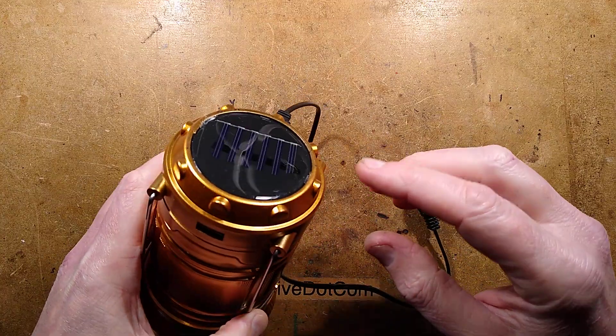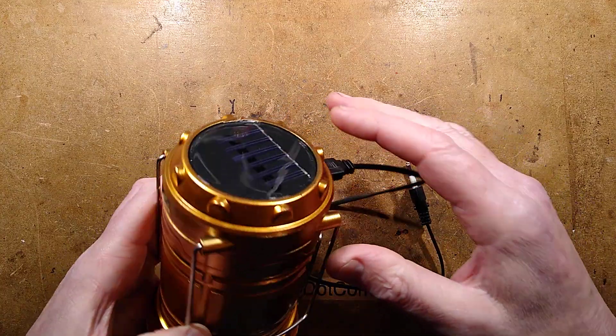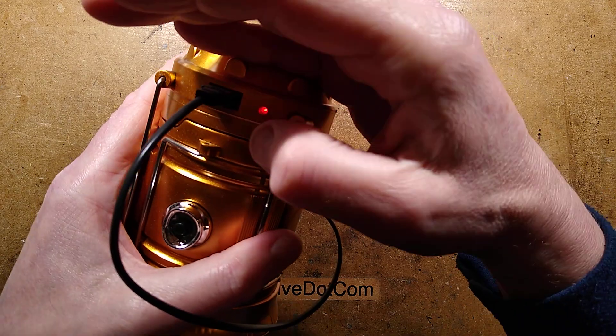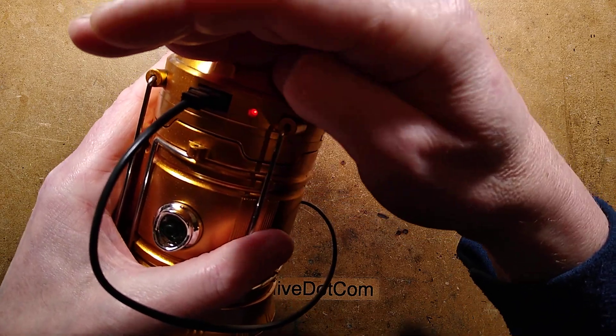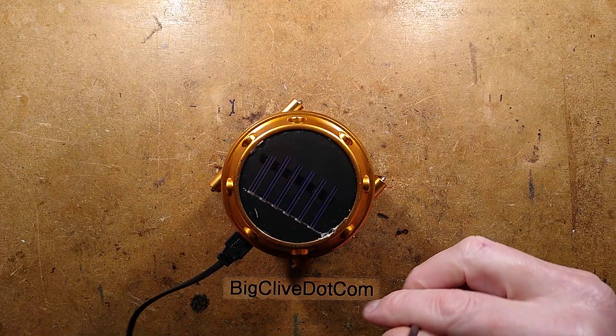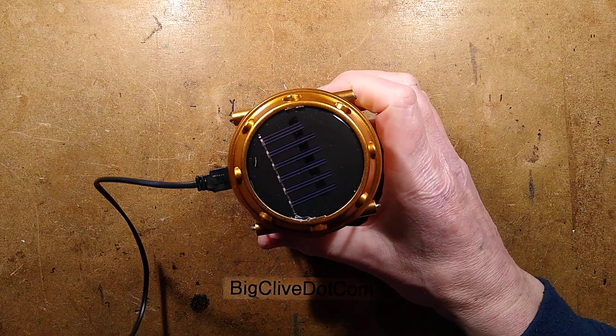It's got a solar panel on top. It turns out the solar panel with just six cells putting out about three volts is probably only for that little red LED there that you can see glowing. But you plug it into the mains and you can charge it from the mains supply. In this case 240 volts.